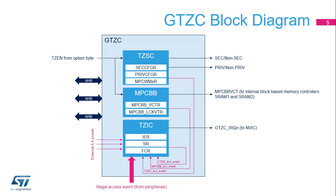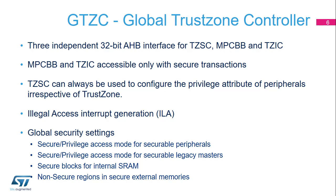The TZ-IC reports illegal accesses to the Cortex-M33 core through a secure interrupt request. This figure details the operation of the three GTZ-C subunits. The TZ-SC is in charge of assigning the secure and privileged attributes of securable peripherals and masters. The MPC-BB1 is in charge of assigning the secure attribute of internal SRAM blocks. The TZ-IC signals illegal accesses to the Cortex-M33 core. Illegal accesses can occur internally or externally to the GTZ-C when a non-secure access to secure memory mapped registers is attempted. The GTZ-C supports three independent AHB interfaces for configuring the TZ-SC, the MPC-BB, and the TZ-IC.